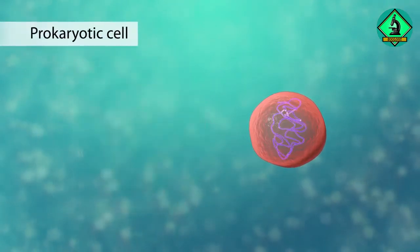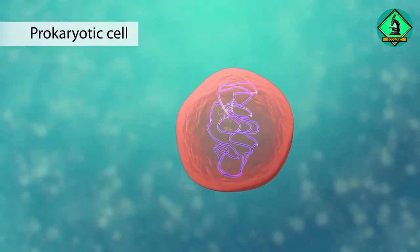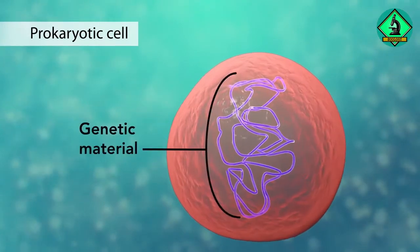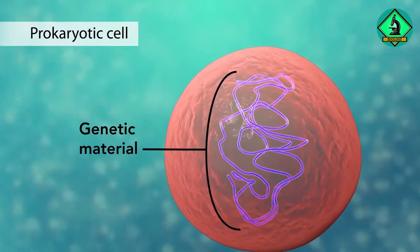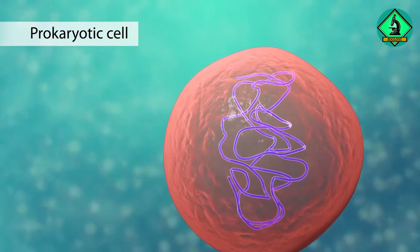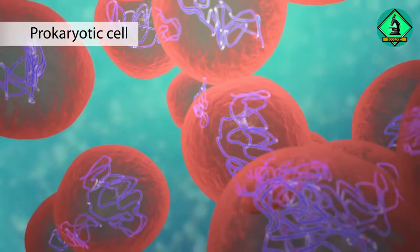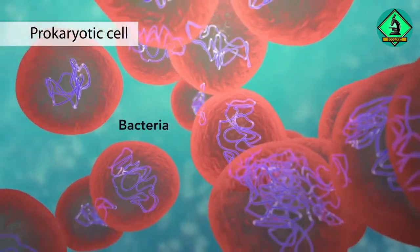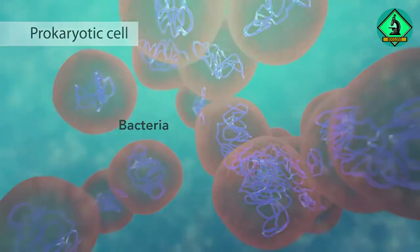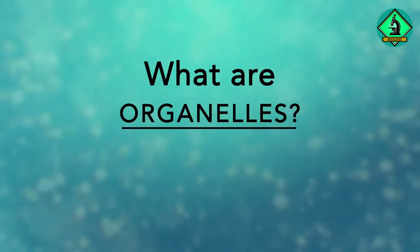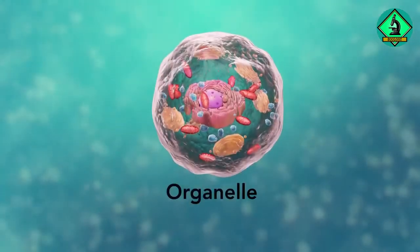The second category is prokaryotic cells. They don't have a nucleus or membrane-enclosed organelles. They do have genetic material, but it's not contained within a nucleus. Prokaryotic cells are always one-celled or unicellular organisms such as bacteria.